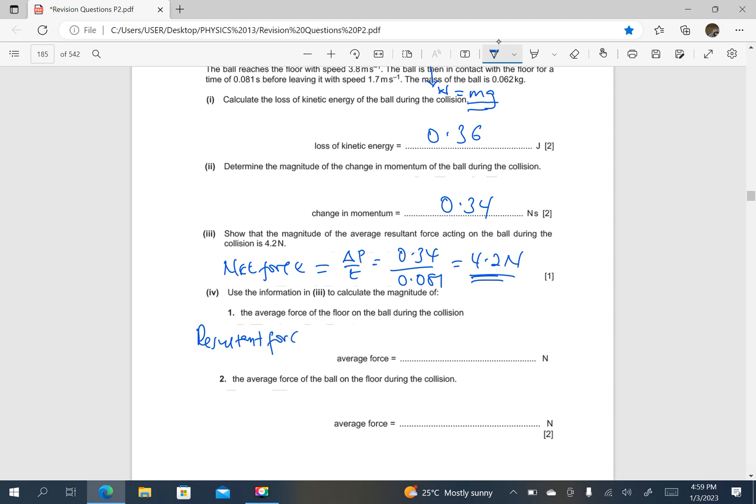The resultant force is going to be equal to the difference between the force caused by the floor minus the weight, because they are in opposite directions. And the resultant force is 4.2. This should be equal to the force by the floor minus the weight.